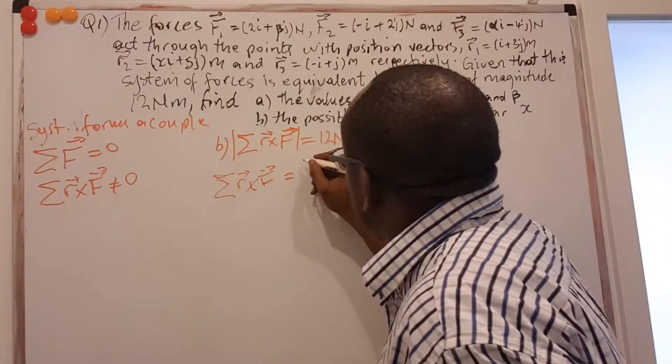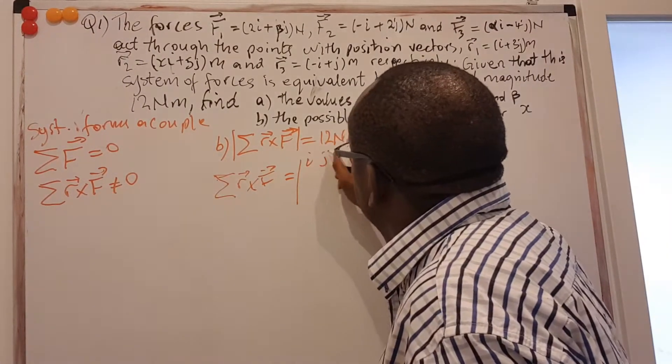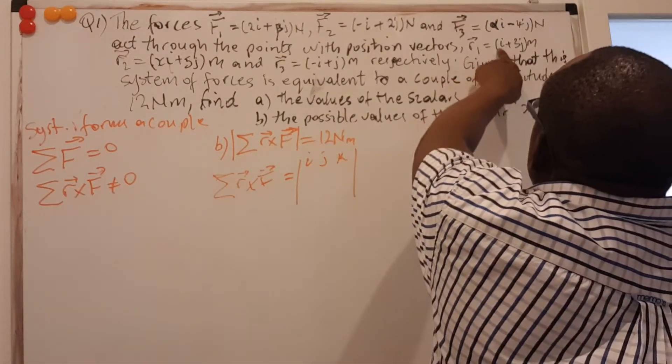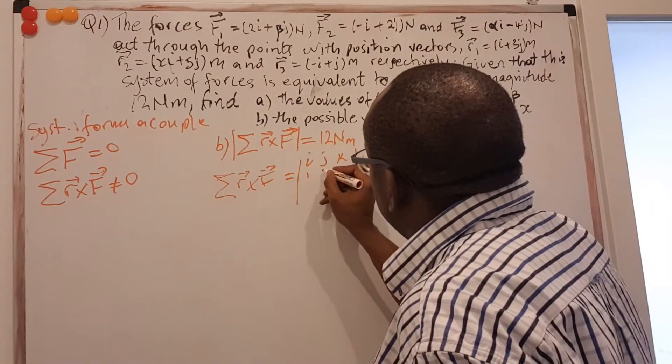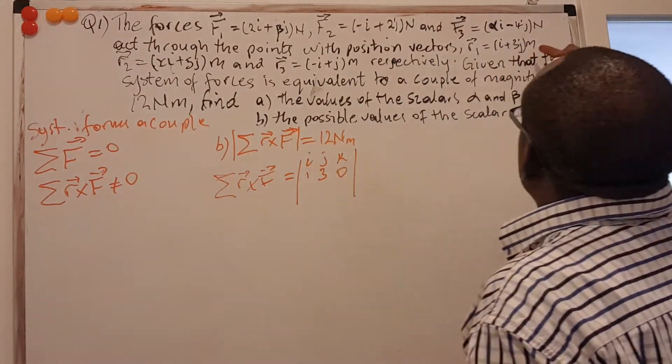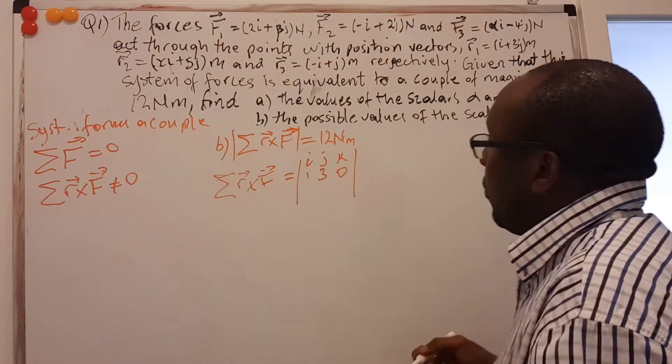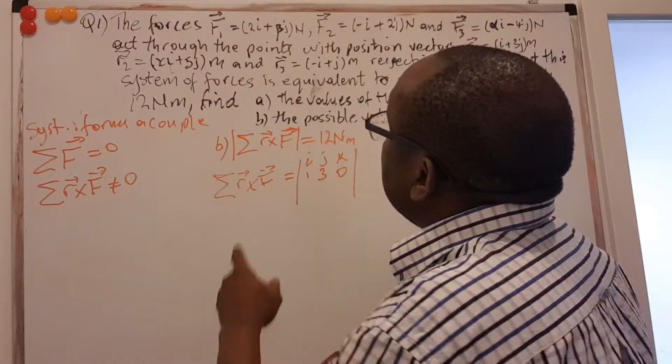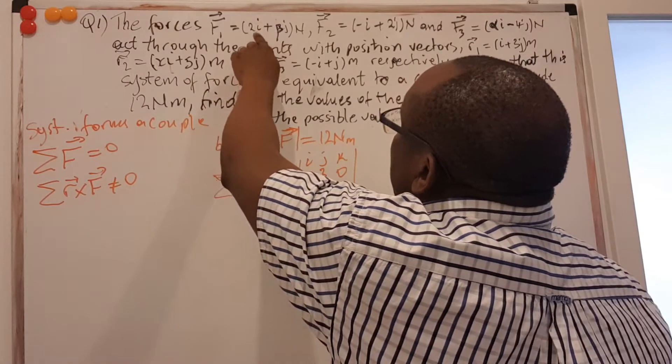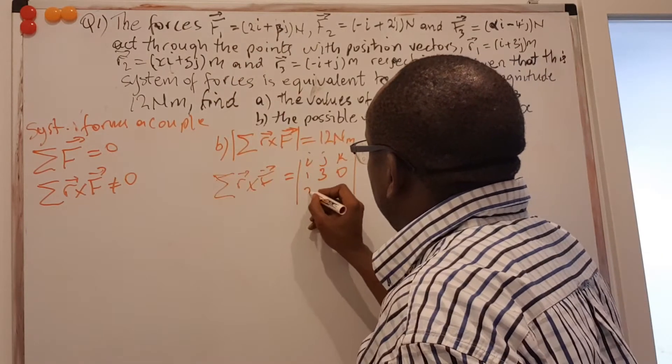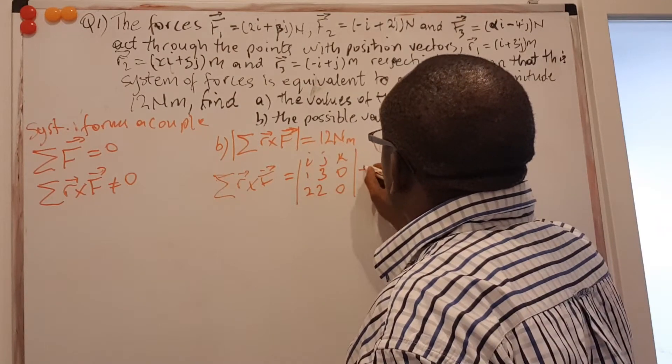So in this case, we will take the first one here. We write our i, j, k. So I start with R1. That is 1 + 3j, so 1, 3, 0. There is no k. So actually means the k component does not exist, but we can put it as 0k. That's no problem. So this is 1, 3, 0. And then we take the force. That is 2i. Our β already calculated and that was 2. So this is 2, 2, 0. Plus.